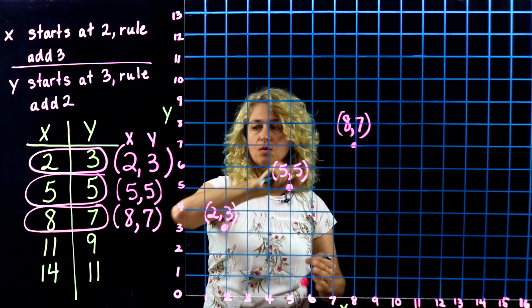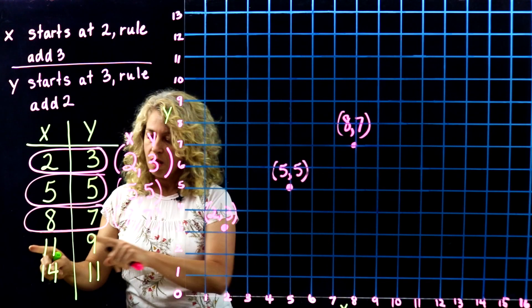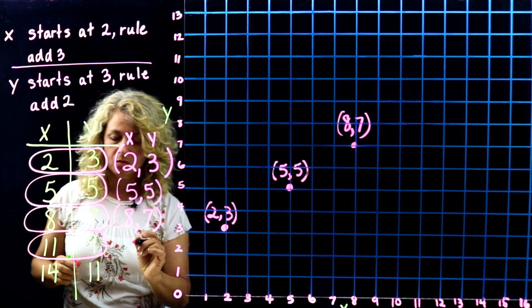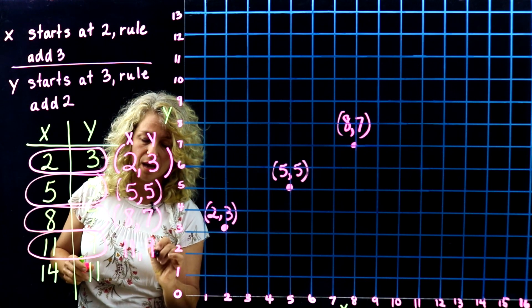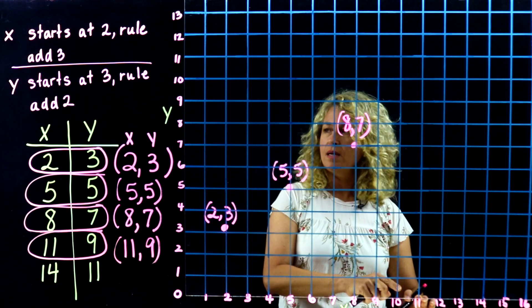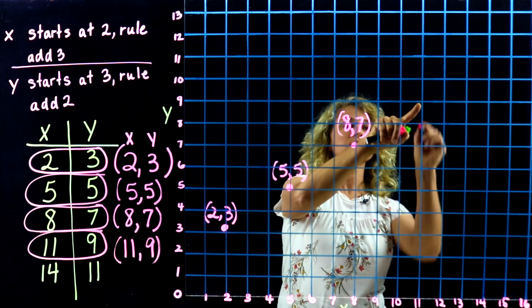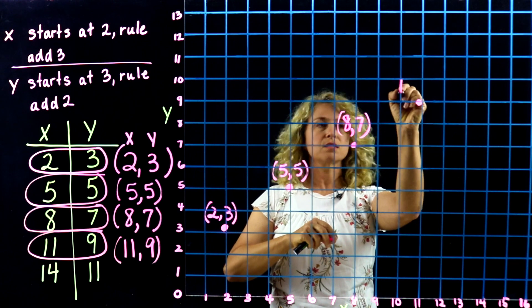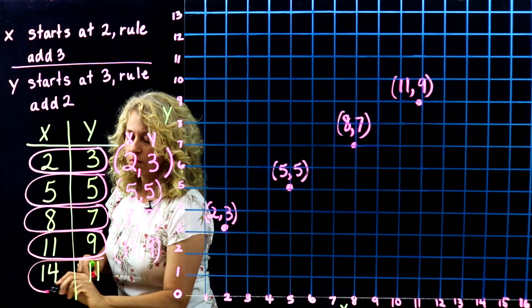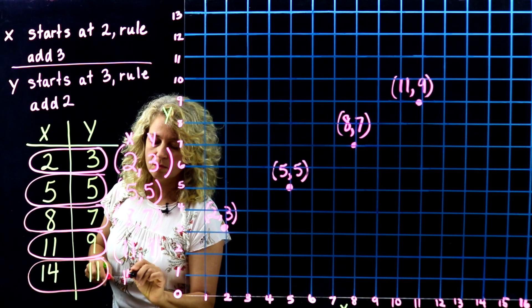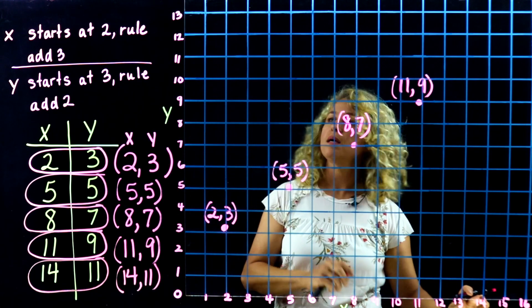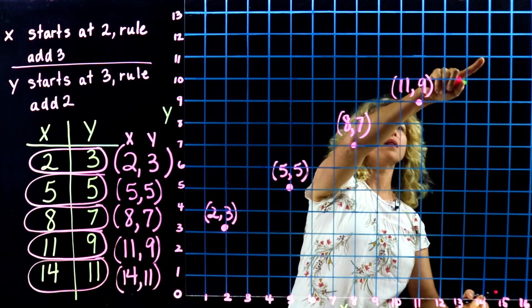If you did it incorrectly, (7, 8) would be nearby but wrong. The next corresponding terms are 11 and 9, so go over 11 and up 9 — that's (11, 9). And the last one is (14, 11): go over 14 and up 11.